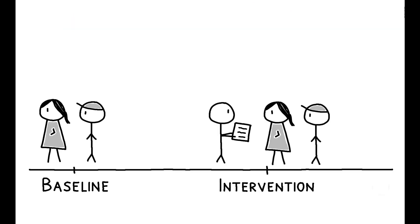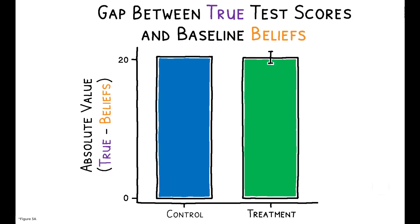First, the author shows that at baseline and before the intervention, many parents have inaccurate beliefs about their children's academic performance. In both the treatment and control groups, the average gap between children's true test scores and parents' beliefs about their test scores is over 20 points on a 100-point scale.